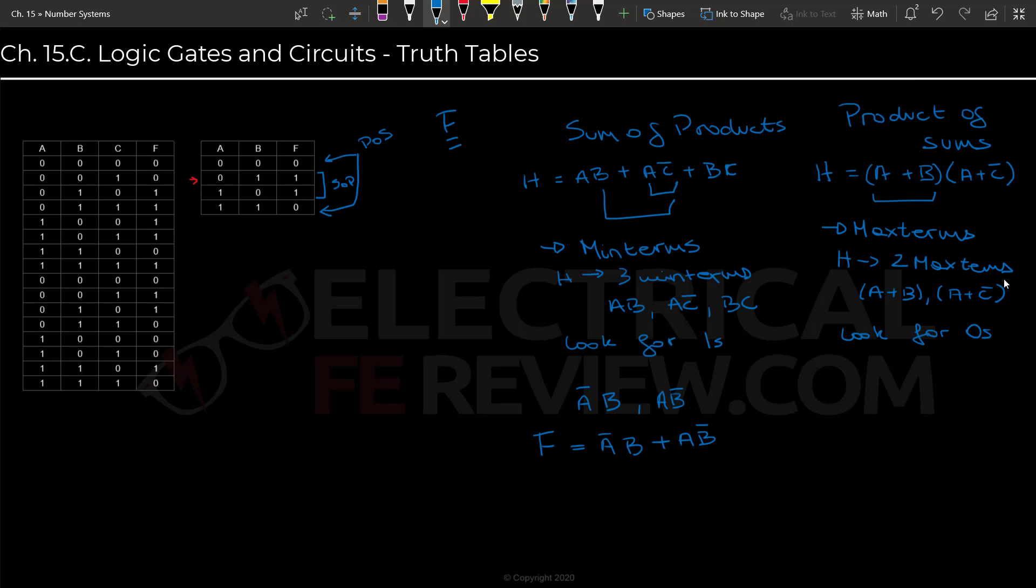Now, for the product of sums, we will be looking for zeros, and we will be counting zeros as the variable and ones as the complement of the variable. So it is a little confusing, but that's why I recommend sticking with one of them and just remembering how the other one works in case they ask you for it specifically.